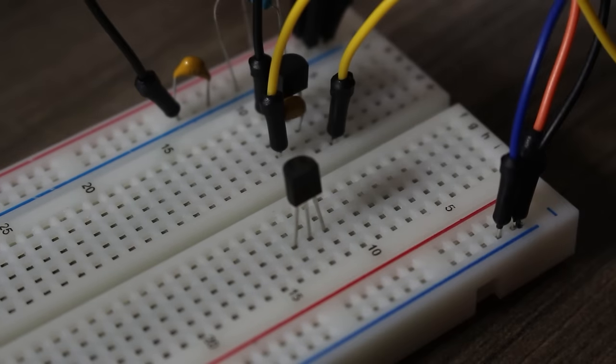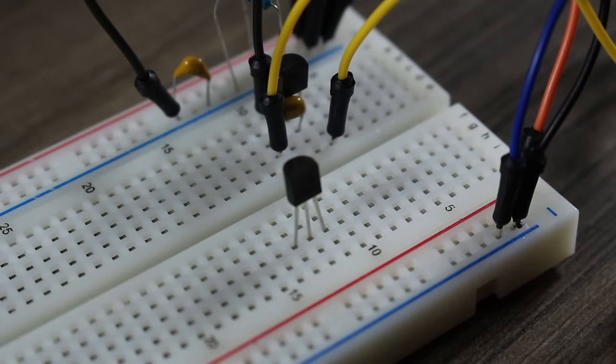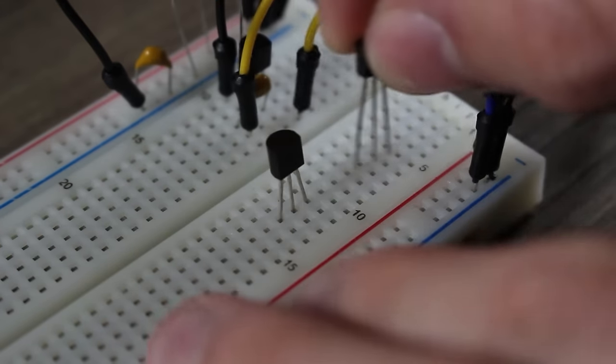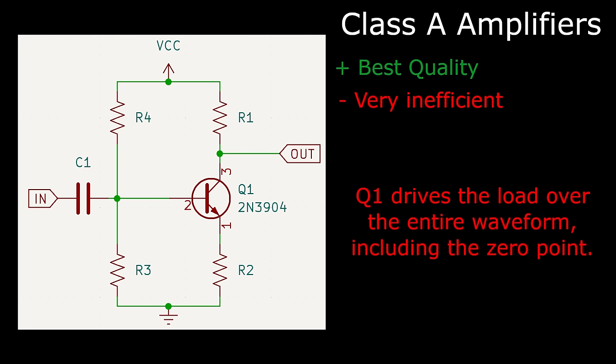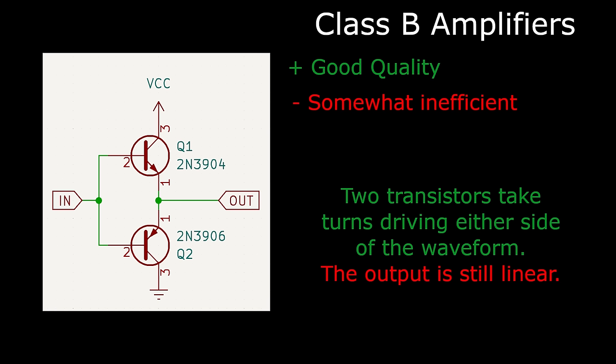Let's first begin with how exactly a Class D amplifier works and why it's so efficient. To do that, let's briefly take a look at Class A and Class B amplifiers to see their shortcomings. Class A amplifiers have the best output quality, but that comes with the worst efficiency of the bunch. The poor efficiency comes from the singular transistor, which is always on and active, even if there is no input signal. Class B does a bit better in terms of efficiency by using two transistors to drive either side of the load. However, the output is still mostly linear, and the transistors will burn off the excess power before it reaches the load.